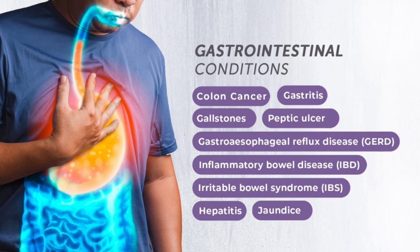Signs in pancreatitis: Cullen's sign (bruising around the umbilicus) and Grey Turner's sign (discoloration in the flanks). Patient may also be jaundiced. Initial investigation: serum lipase (more specific and sensitive than amylase, used in NHS). Lipase more than three times the upper limit of normal is significant. CT abdomen with contrast confirms diagnosis. Management: IV fluid resuscitation, IV analgesia, nutritional support, IV antibiotics; surgical debridement if not resolving.